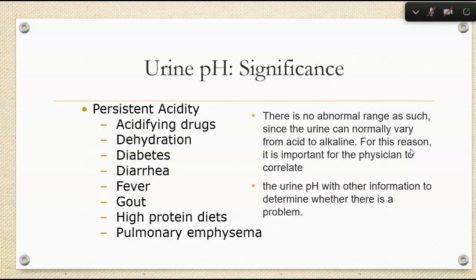Why do we care about urine pH? With persistent acidity, we can see this in patients on acidifying drugs, all the way to dehydration, diarrhea, gout, high-protein diets like the Atkins diet, and pulmonary emphysema. That last one is directly related to acid-base balance — one of the buffering systems is your lungs and kidneys or the bicarbonate system. If your lungs are compensating, the kidneys try to pick up the slack.